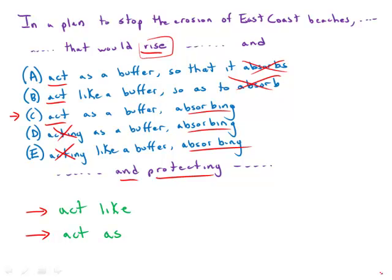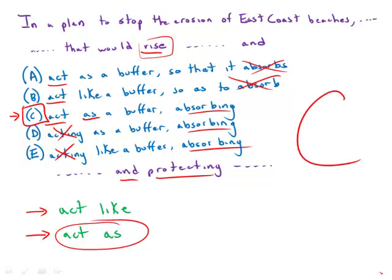For example, if this breakwater 'acts like' a buffer, that implies it's not really a buffer — there's something only superficially similar between the breakwater and a buffer, which is not what the context means here. We want to say the breakwater 'acts as' a buffer, taking on the role of a buffer. So 'act as' is correct in context, and that's exactly what answer choice C has. C is 100% grammatically correct and by far the best answer choice.